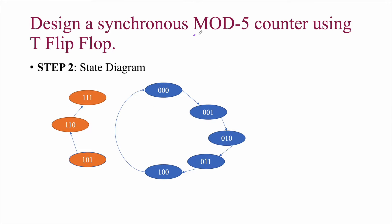Since it is a mod-5 counter, we have to draw a state diagram having 5 states: 000, 001, 010, 011, 100, and back to 000. The remaining states 101, 110, and 111 are invalid. We will be using only these 5 valid states, and here is the state diagram for the same.